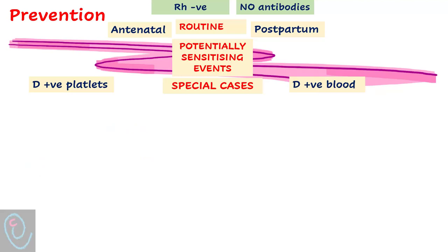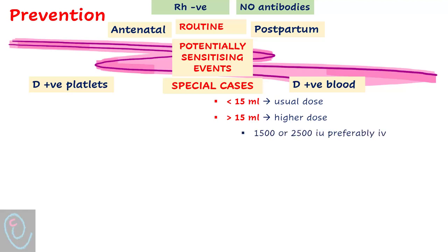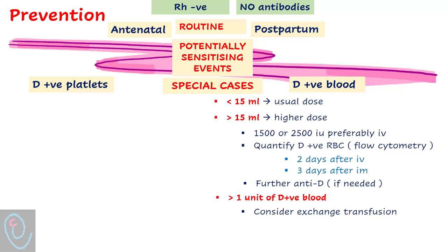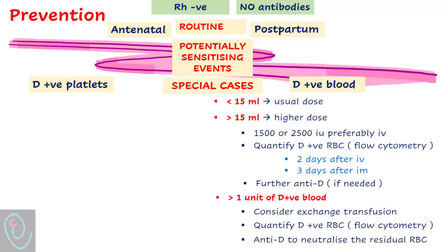In case of inadvertent administration of D positive blood: if the amount of blood is less than 15 ml, use the usual dose of 125 international units per 1 ml. If more than 15 ml is transfused, use a higher dose of 1500 or 2500 international units, preferably intravenous. Quantify D positive red blood cells by flow cytometry at 48 hours after IV administration or 72 hours after IM administration. Further Anti-D should be given until there are no detectable D positive cells in circulation. If more than one unit of D positive blood is transfused, consider exchange transfusion, and administer Anti-D to neutralize the residual red blood cells.